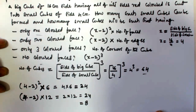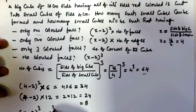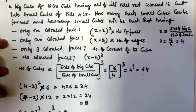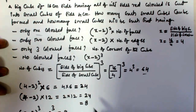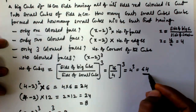No colored faces is equal to (x minus 2) cubed. x is 4, so (4 minus 2) cubed, that is 2 to the power of 3, which equals 8. So no colored face cubes are 8.